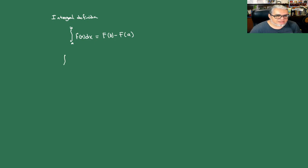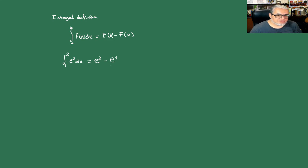Por ejemplo, la integral entre 1 y 2 de la función e^x respecto de x. Esta función se integra como e^x, entonces es e² menos e¹, que bien podríamos reescribir como e(e - 1). Esto ya es un número, ya no necesita la constante de integración, porque ya estamos diciendo en qué conjunto concreto estamos preguntando por este promedio generalizado que es la integral.